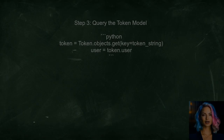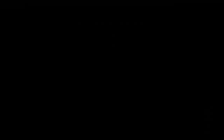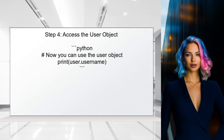After obtaining the token string, query the token model to find the corresponding user. This is done by filtering the token objects. Finally, you can access the user object, which contains all the information related to the authenticated user.